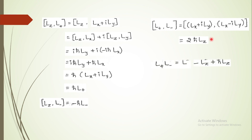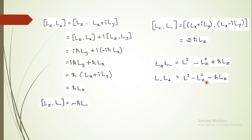To remember further, if we multiply the raising operator with the lowering operator and express it in terms of L² and Lz: L+·L− equals L² minus Lz² plus ℏ·Lz, and L−·L+ equals L² minus Lz² minus ℏ·Lz. Subtracting these, L²·L² and Lz²·Lz² cancel, leaving ℏ·Lz minus (−ℏ·Lz) which equals 2ℏ·Lz — confirming the commutation relation [L+, L−] = 2ℏ·Lz.